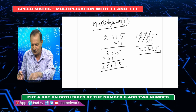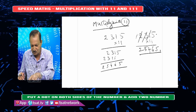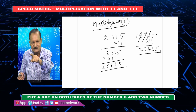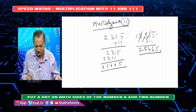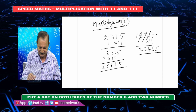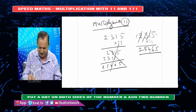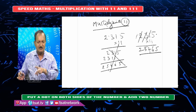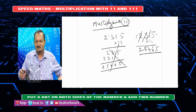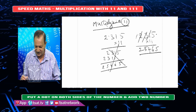So simply put 2 dots — one on either side — and add 2 adjacent numbers: 0 plus 2 is 2, 2 plus 3 is 5, 3 plus 1 is 4, 1 plus 5 is 6, and 5 plus 0 is 5. So the answer is 2, 5, 4, 6, 5. Even in speed math, simply put 2 dots and add 2 adjacent numbers. I think it is clear.